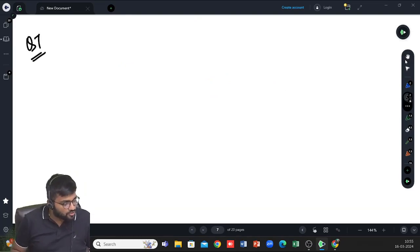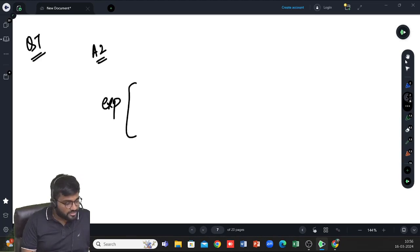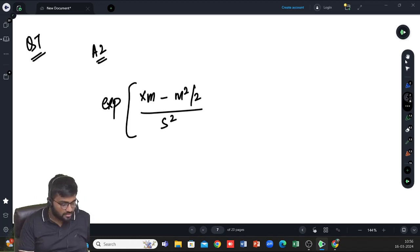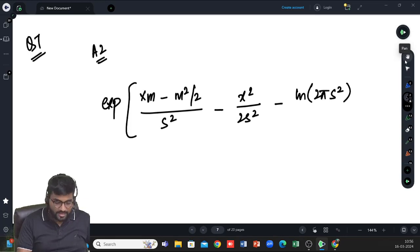The probability density function of a normal distribution is given. Identify which one of the following options gives the correct expression for the exponential family of the density f. So it is very simple. We have done it in class. This will be answer number 2, which is exponential xm minus m square by 2 by s square minus x square by 2s square minus ln 2pi s square by 2. So this was very simple.